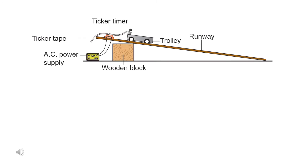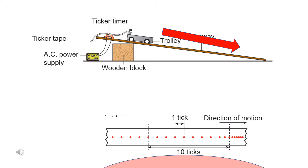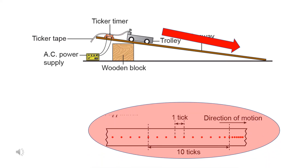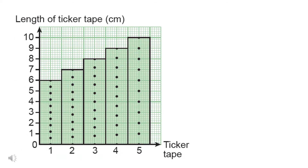How can we take measurements on the ticker tape to determine the velocity, displacement, and acceleration of an object in motion? This diagram shows a setup of an activity to determine the velocity and acceleration of an object using a ticker timer. This is the ticker tape marking when a trolley moves down the runway. The ticker tape was cut into 5 strips, and each strip has 10 ticks.